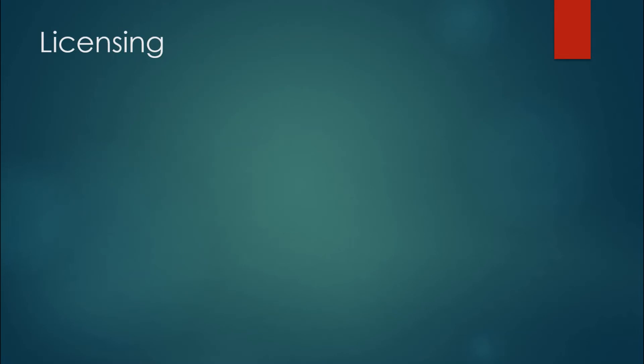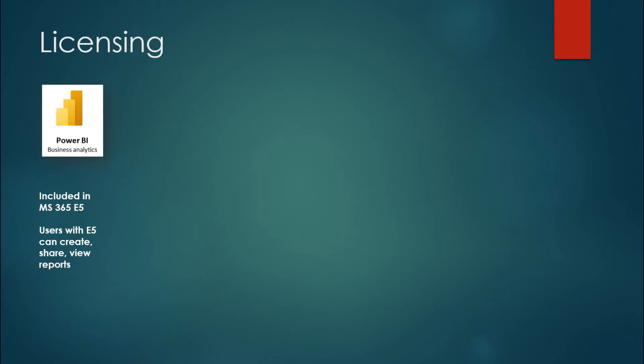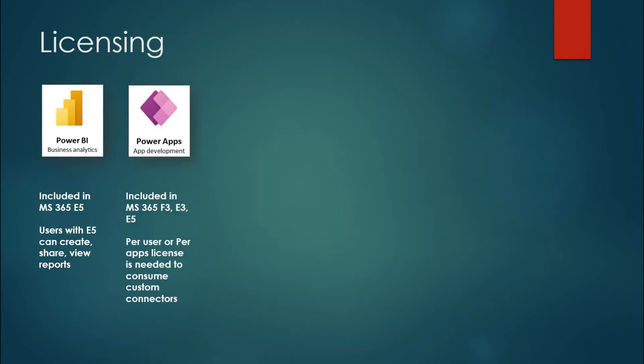Now let's talk about licensing. All applications have their own licensing, and most are covered under Microsoft 365 or Dynamics 365 subscriptions. For Power BI, it is included in Microsoft 365 and Office 365 plans — with E5 license you can create, share, and view reports. For Power Apps, users with Microsoft 365 F3, E3, and E5 licenses can run apps; E3 and E5 can also create apps, while F3 is run-only. Separate per-user and per-app licensing is also available.